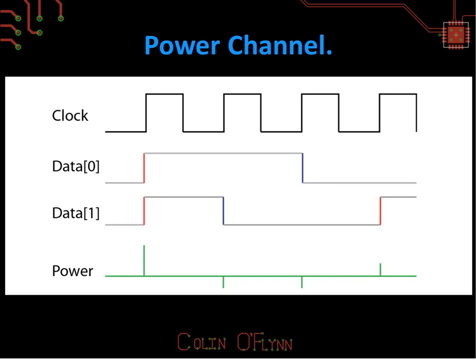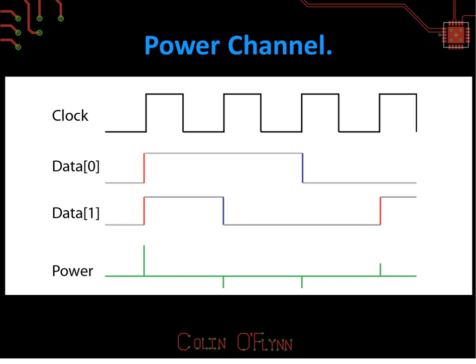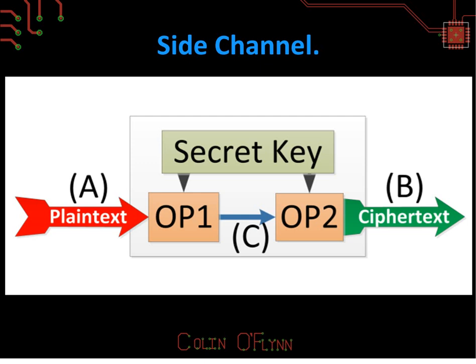How do we actually crack a cryptographic system? The key is these intermediate states. Imagine a crypto system with a secret key: we put in plaintext at A, it encrypts with the secret key, and we get ciphertext at B. Knowing A and B is useless to the attacker — they can't derive the secret key. But there are intermediate points at C that are easier to use. If the attacker knew A and C, they could figure out the secret key. Using side-channel attacks, we figure out these intermediate values we can't physically probe.